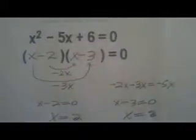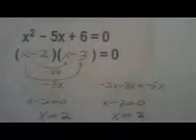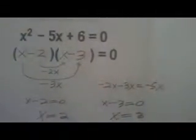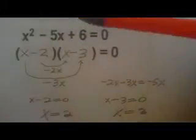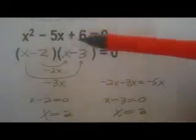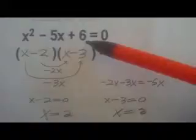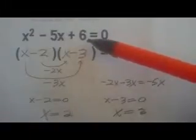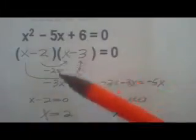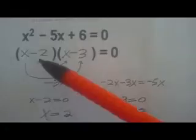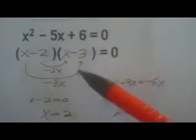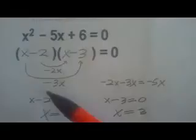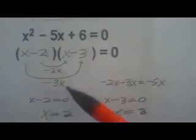This is the fourth problem in this series. We see here we have minus 5x again, but here we have plus 6. So here, instead of using two plus sign factors, we use two negatives. Minus 2 times minus 3 will give us plus 6. And here we get minus 2x, and here we get minus 3x.